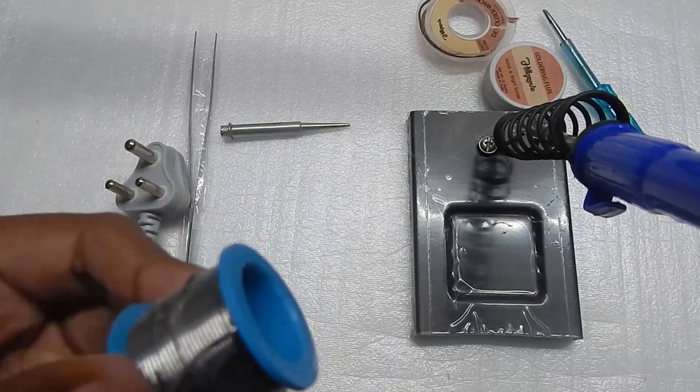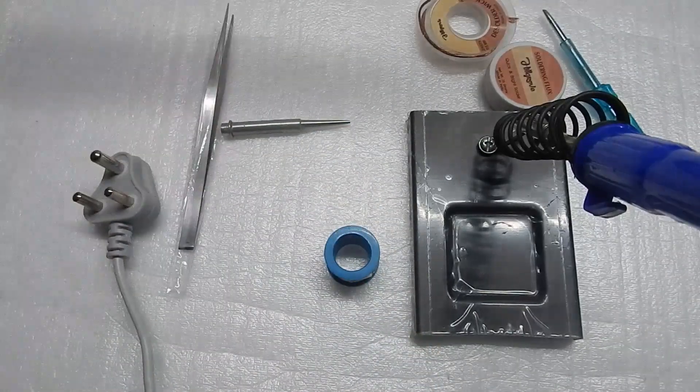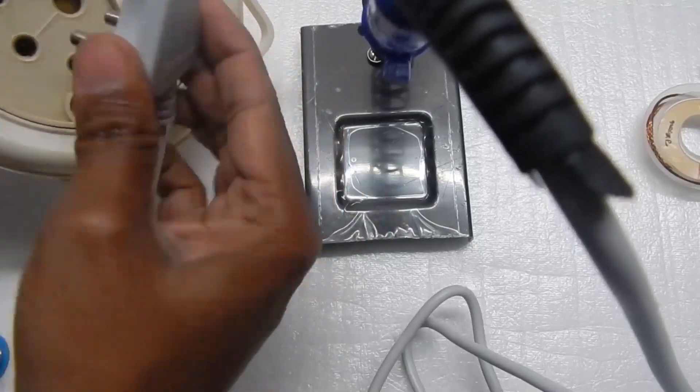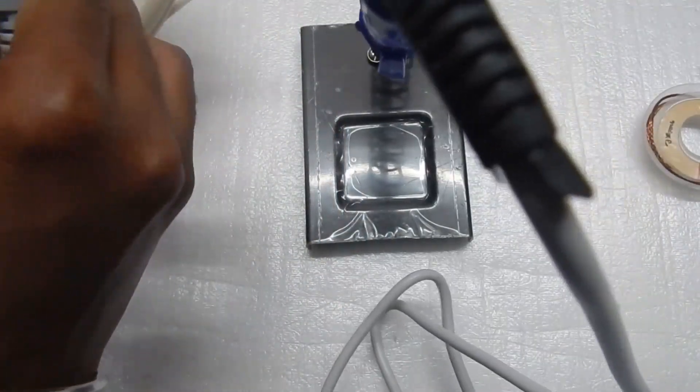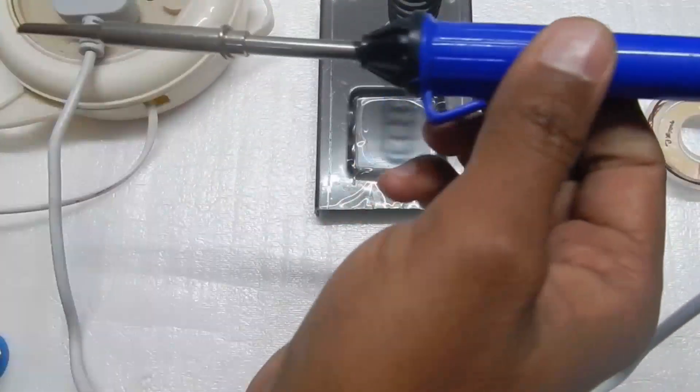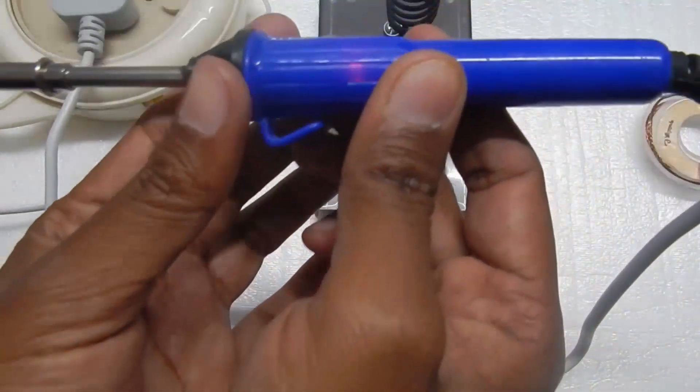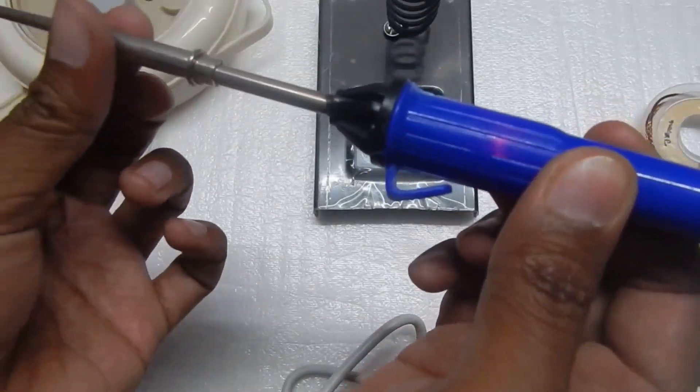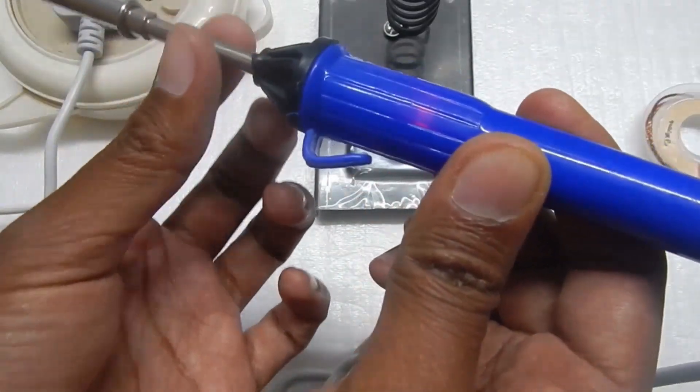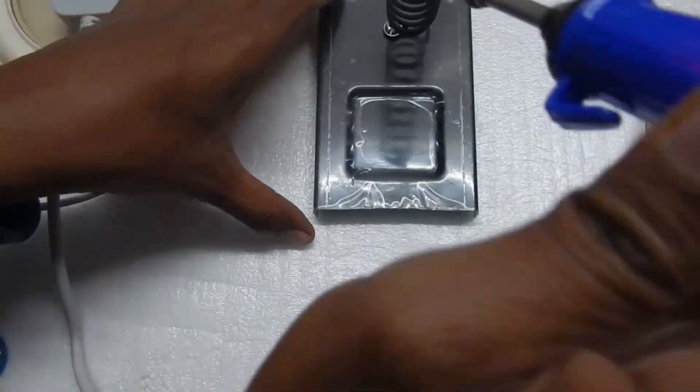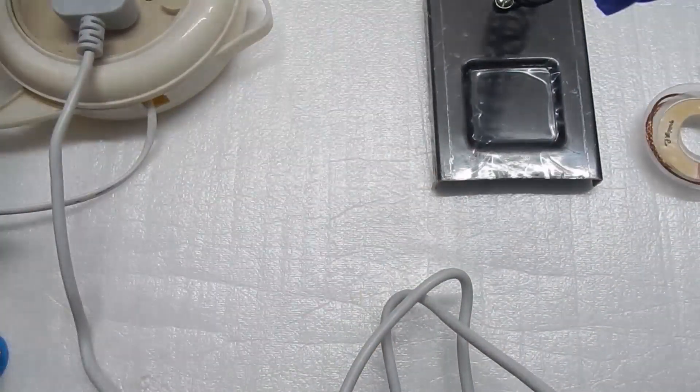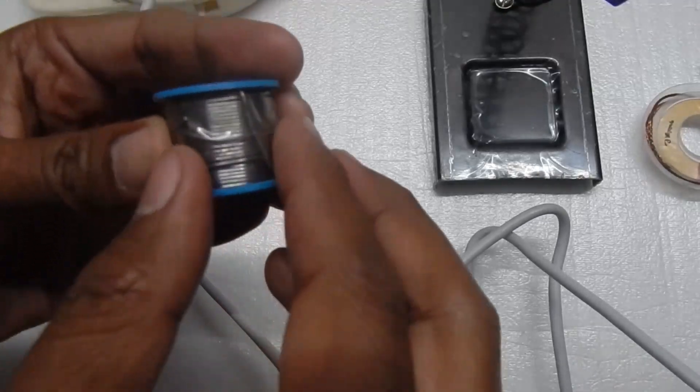You also get this five meter long 0.71 millimeter soldering wire and the tweezers. Let me turn the soldering iron on. I've got the extension here, let me plug it in. There's a small red LED that indicates the soldering iron is heating up. I can feel the element warming up.